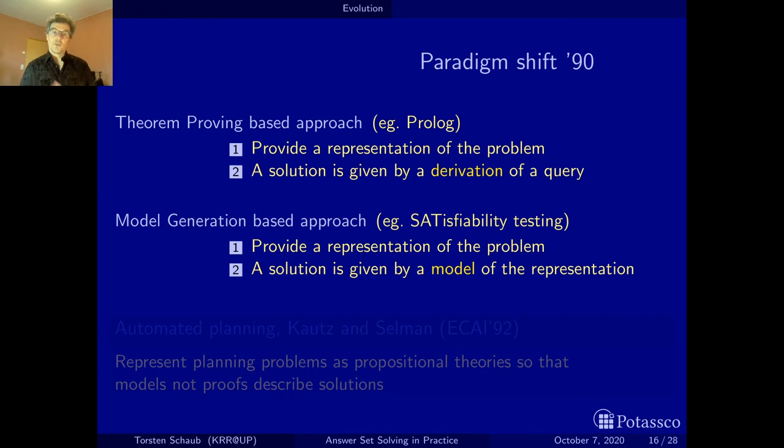To understand this, one has to see that up to then a big part of AI was based on theorem proving based methods like planning—there was deductive planning. The declarative programming approach in logic was dominated by a programming language where the idea was that you provide a representation of the problem which is declarative, but then a solution is given by a derivation of a query. This is like in theorem proving where the idea is you want to prove a theorem from a set of premises, and the premises are the problem. So query orientation, top-down computation, finding a proof for a query.